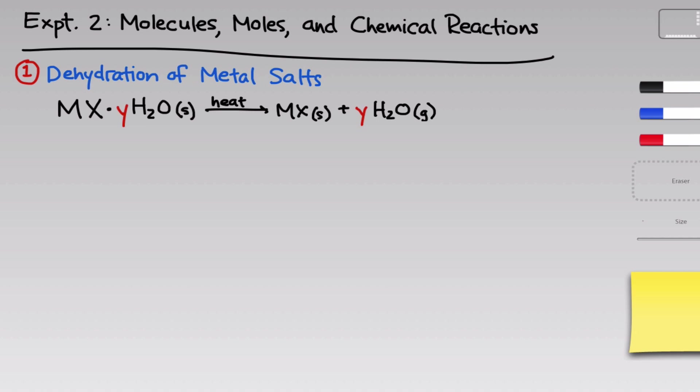If we don't know the number of waters of hydration associated with the metal salt but we do know the molar mass of MX, then we can use this reaction to identify the number of moles of water Y per mole of the entire hydrated salt MX·YH2O.